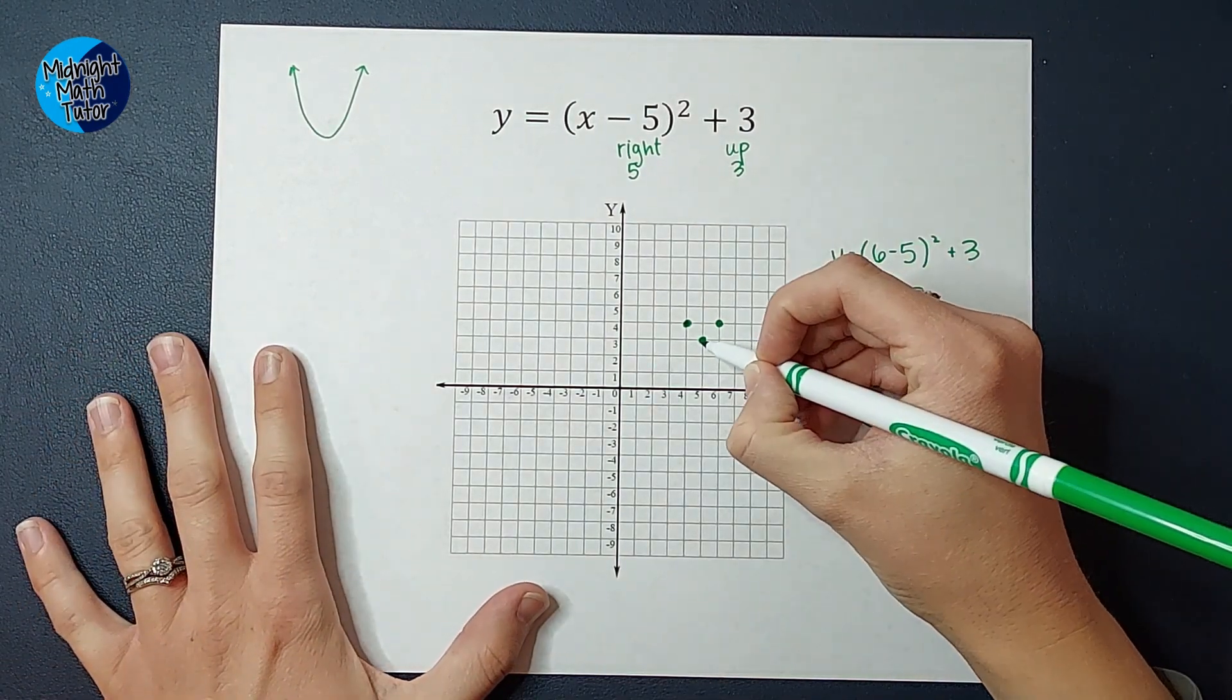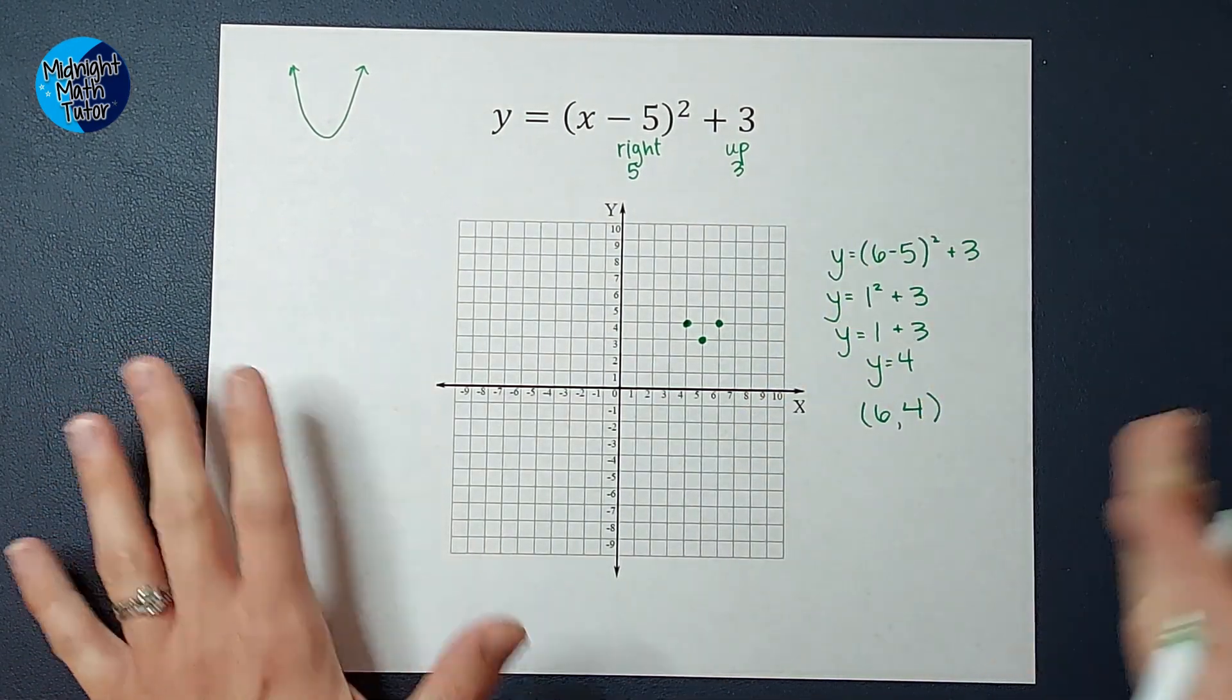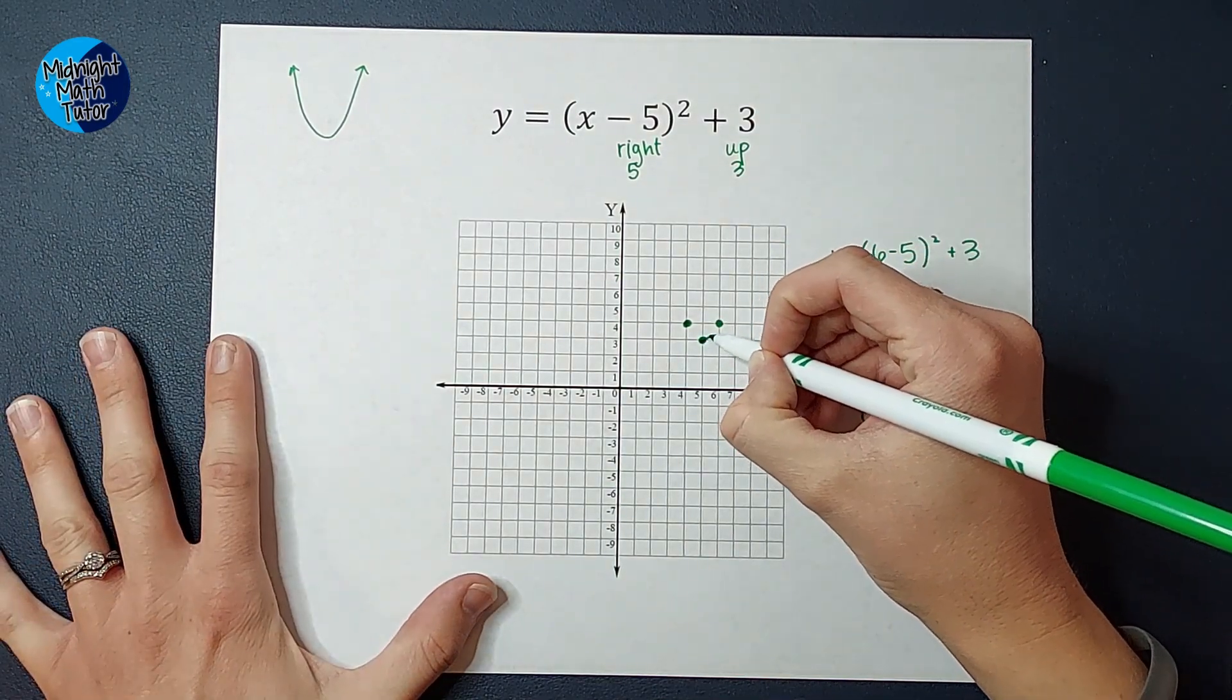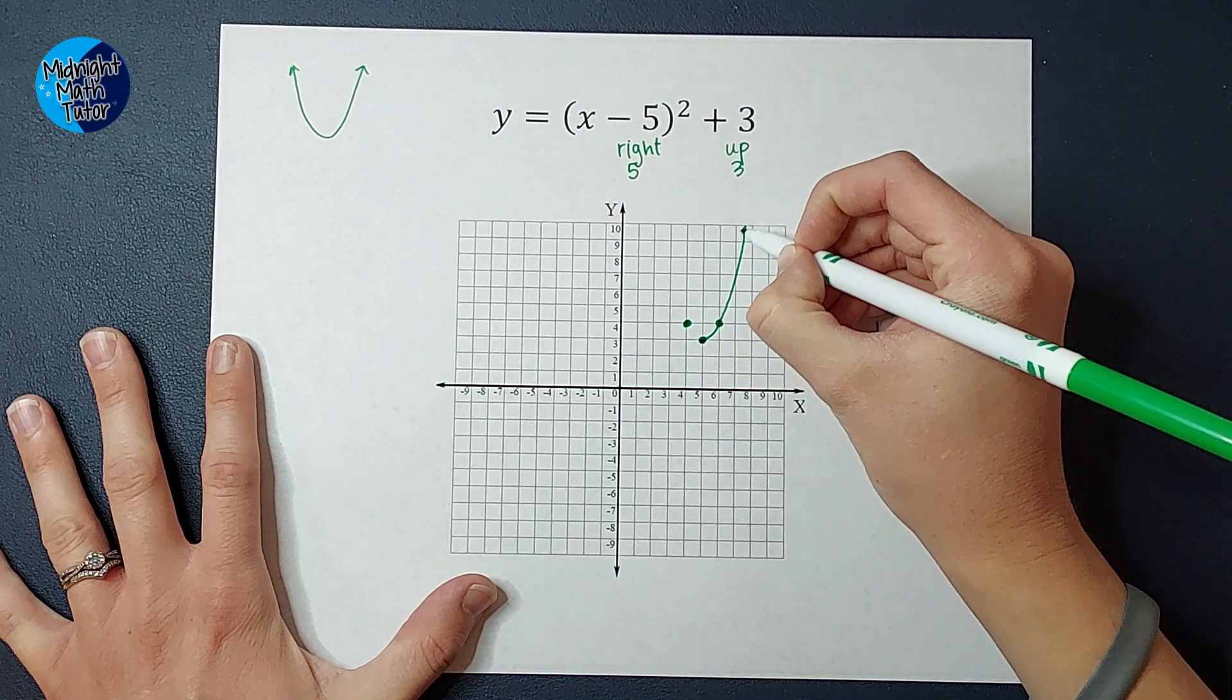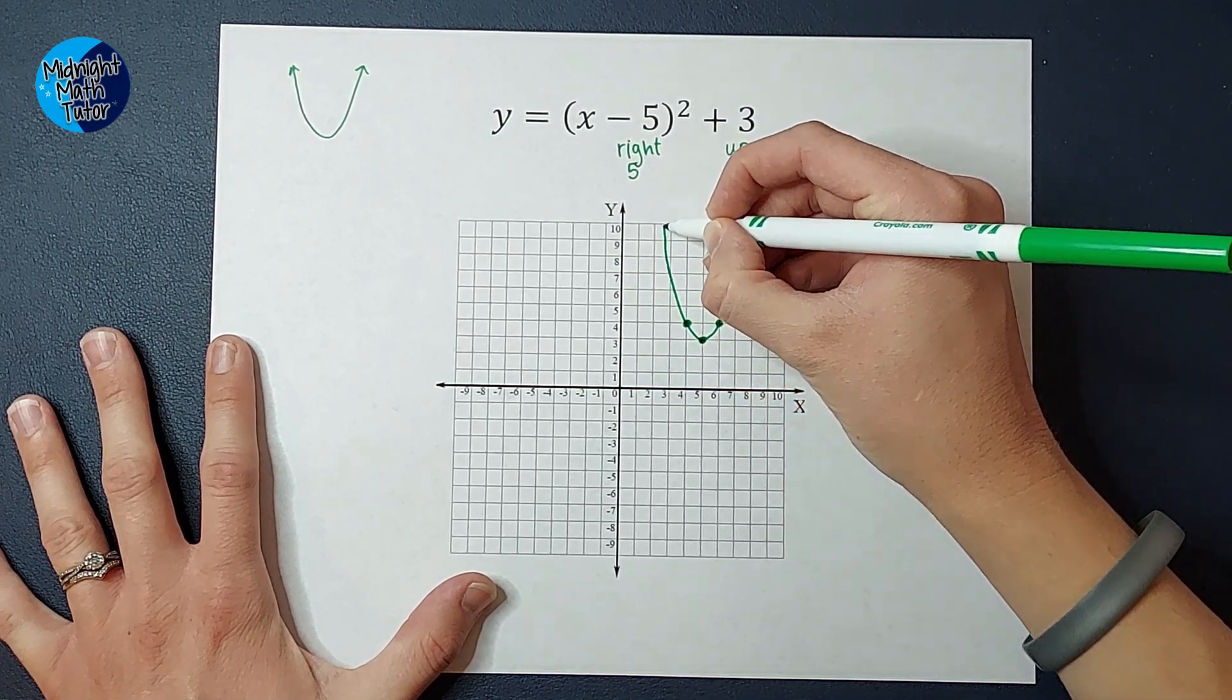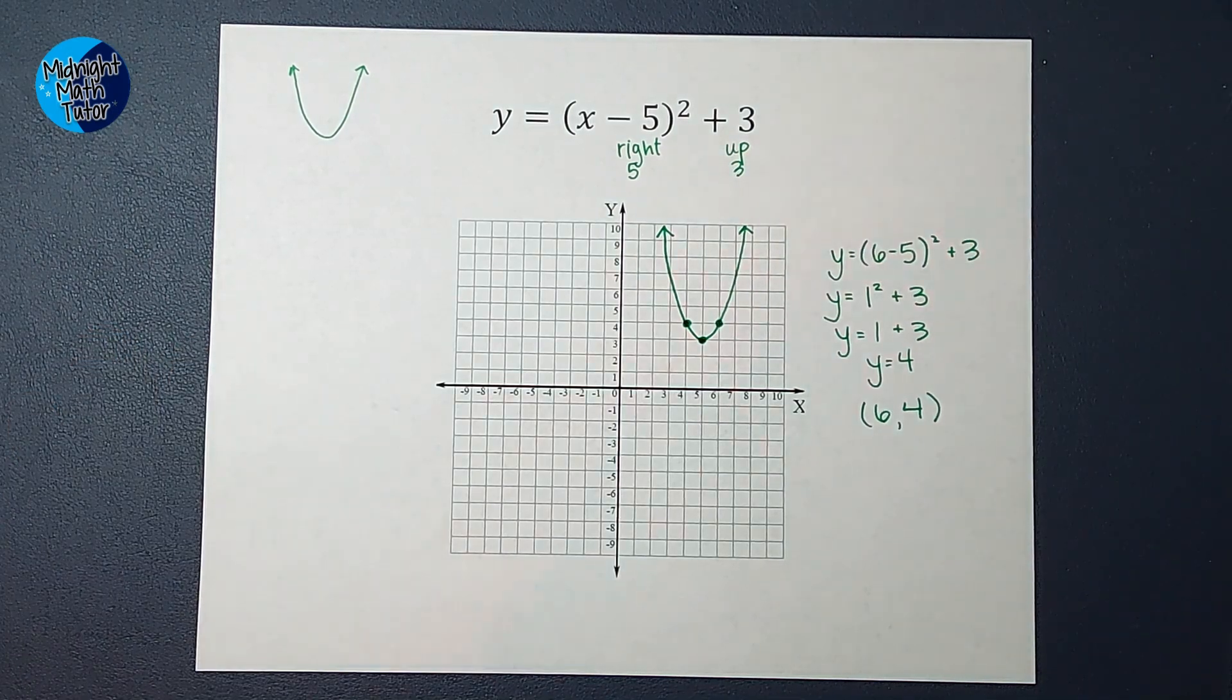So from here, we can go ahead and draw. Remember, it's not a straight line. That's for absolute value. For our squared, it's actually curved like a U, right? Kind of like that.